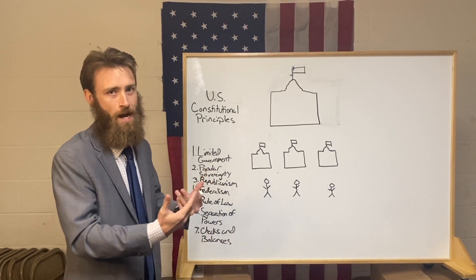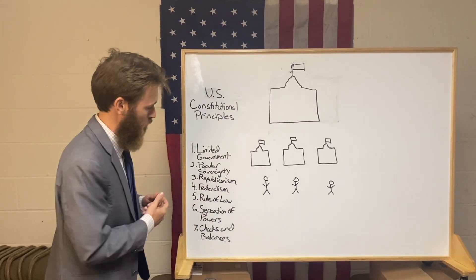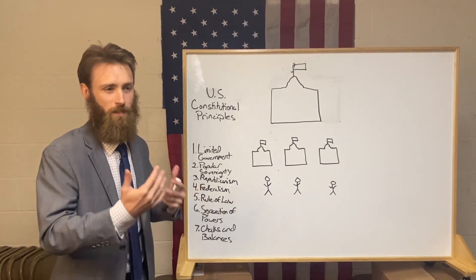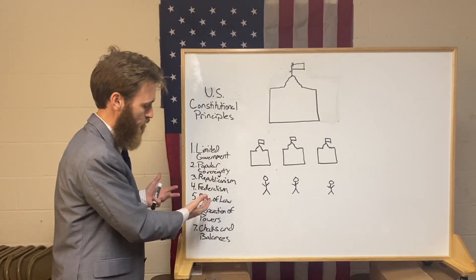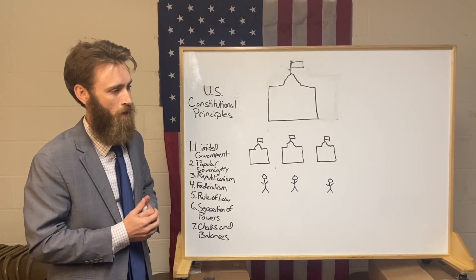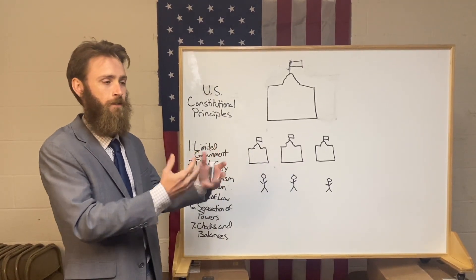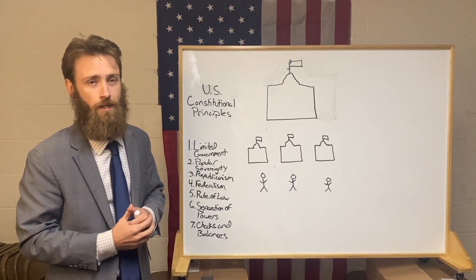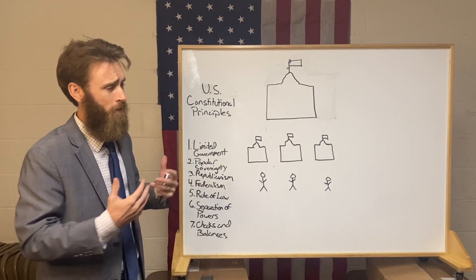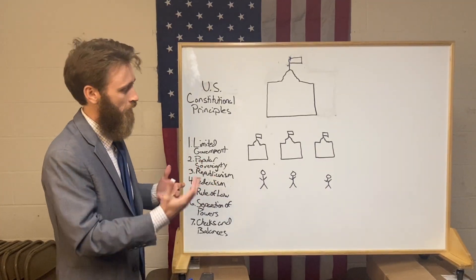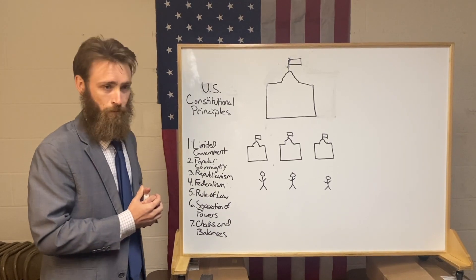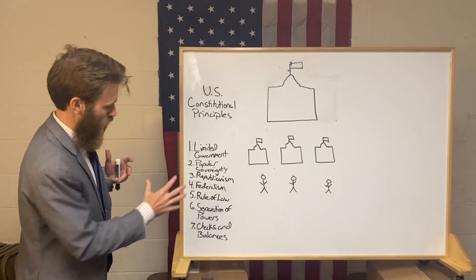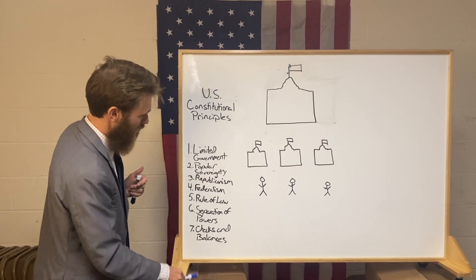We think about the governments of the past like Ancient Greece and Rome, which shared some similarities with the U.S. government. We think about the principles of the European Enlightenment, the political philosophy going on in Europe right before America was founded, the long history in England of natural rights and English common law. The Bible was also a significant influence on the founders in coming up with these principles.